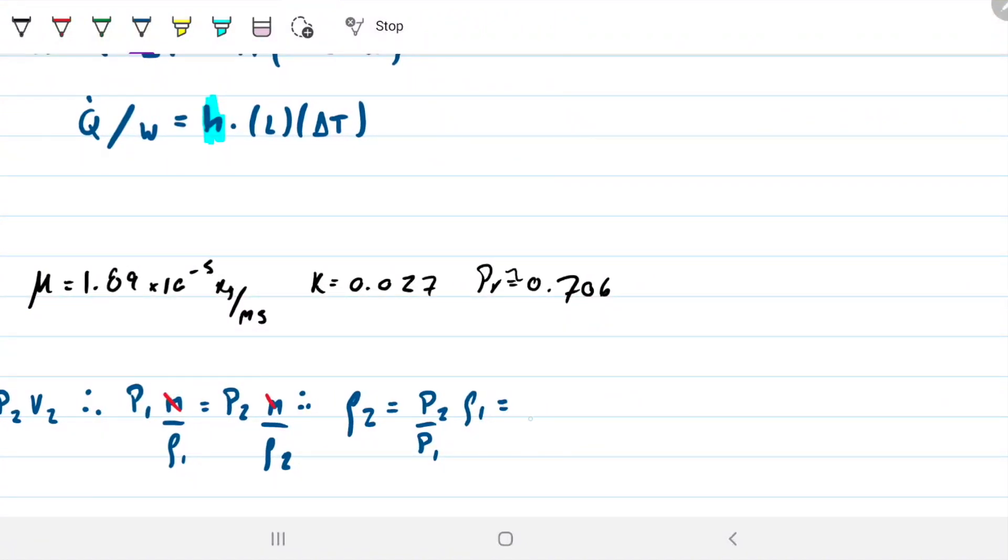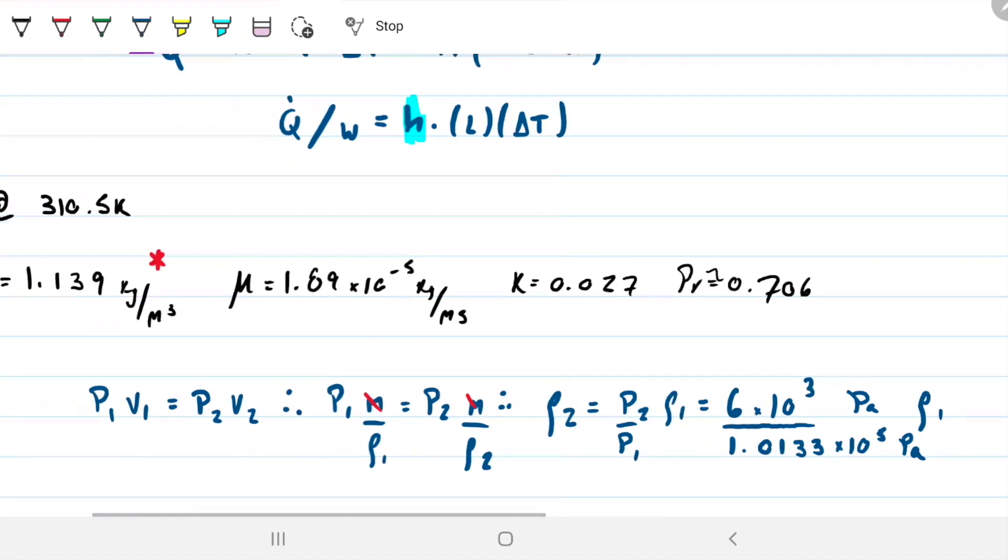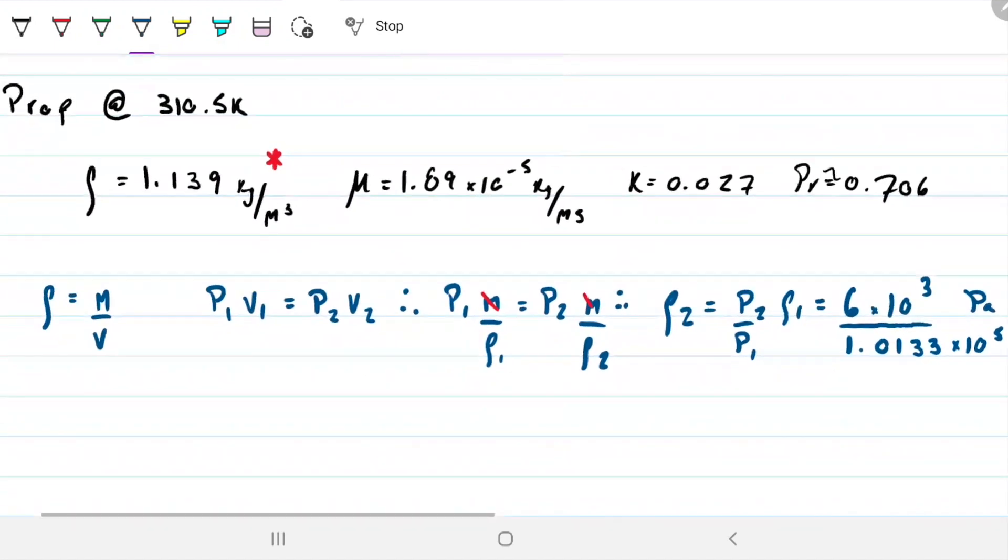So my density two, which is what I'm after, is equal to P₂ times density one divided by P₁. In my case here, the pressure is six kilopascals, so 6×10³ pascals, and one atmosphere is 1.0133×10⁵. The pascals go away, and we'll multiply that by our density one, which is 1.139.